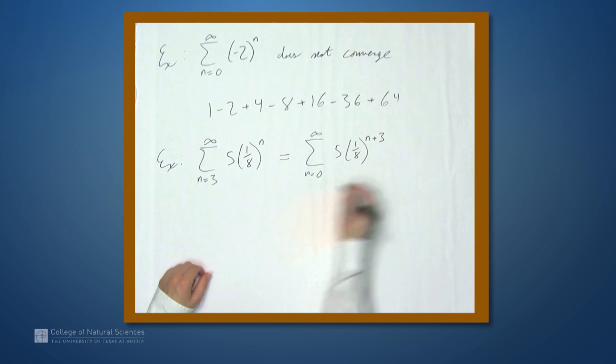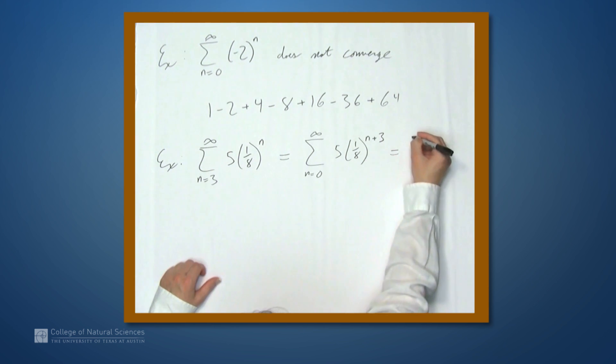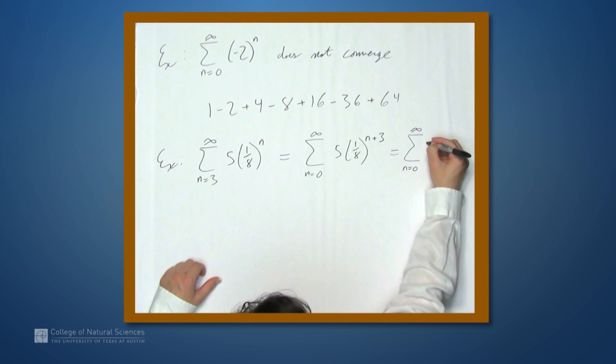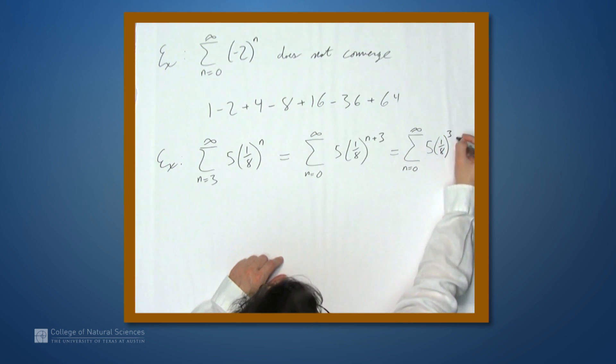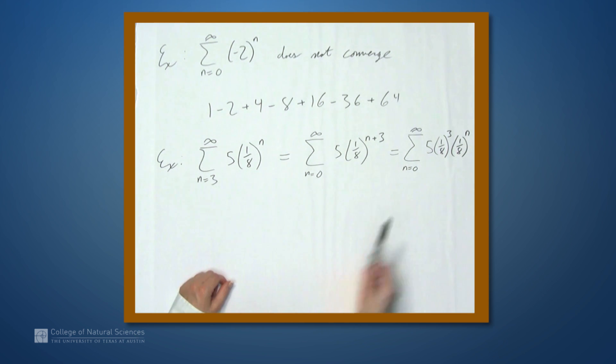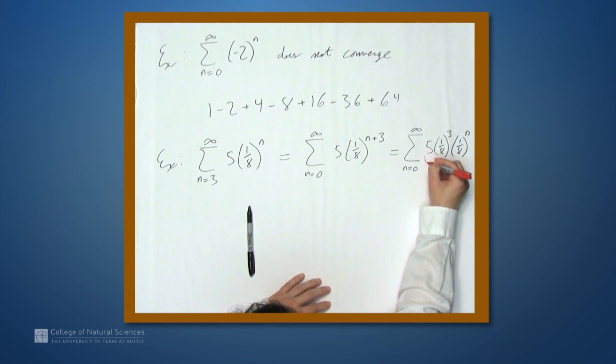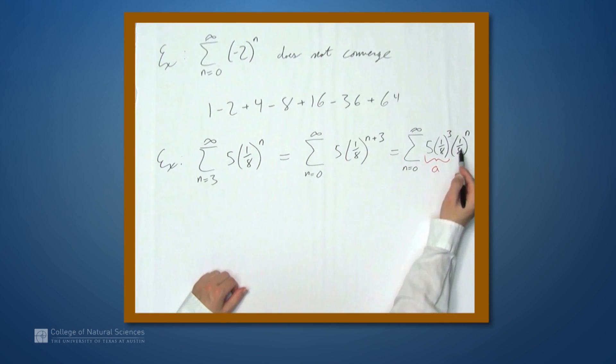We can also correct for this because we can rewrite this series as the sum from n equals 0 to infinity of 5, the 5 is just along for the ride, times 1 eighth cubed, we'll take this 3 off and consider it separately, times 1 eighth to the nth power. 1 eighth cubed times 1 eighth to the nth power, same as 1 eighth to the n plus third power. But now we have our correct value for a and times r to the nth power. Now we can apply the formula.